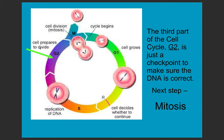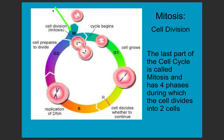Here we are at G2. After the cell has done its normal functions, replicated its DNA, and made these microtubules, we're ready for mitosis. You can see that mitosis in the overall cell cycle is only about 10%. The majority of time is spent in interphase. But we have this short window when the cell is dividing and turns into two cells.